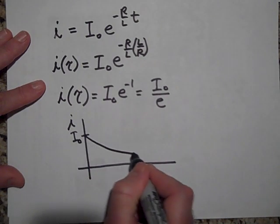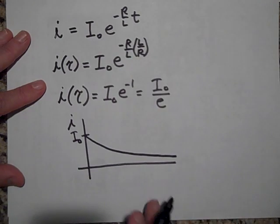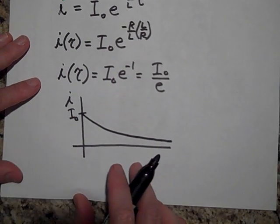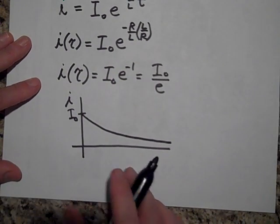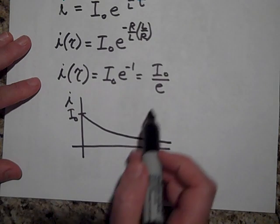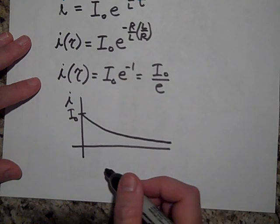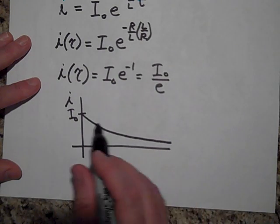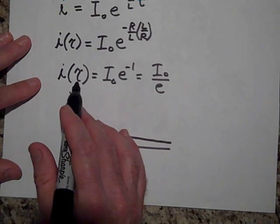Now, I₀ over e is like one-third of the initial current. So here's the point: this decays, and if you ask me how long it would take to decay to zero, I'd tell you it would take an infinite amount of time. Mathematically, at least, it says it's going to take an infinite amount of time.